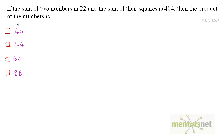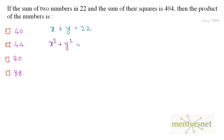Moving on to the next question. If the sum of two numbers is 22 and the sum of their squares is 404, then what is the product of these numbers? The sum of two numbers is 22, so x plus y equals 22. And the sum of their squares is 404, so x squared plus y squared equals 404.